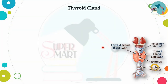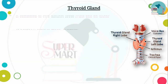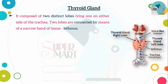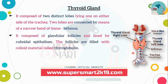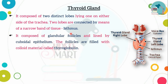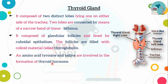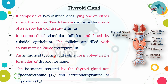Next is the thyroid gland, located in the neck. It has two lobes on either side of the trachea. The tissue is organized into follicles filled with colloidal material. Thyroid hormones are formed using the amino acid tyrosine and iodine. The thyroid gland secretes two hormones: triiodothyronine (T3) and thyroxine (T4).